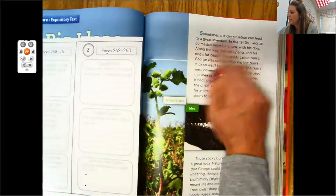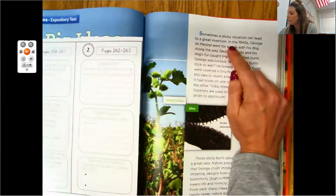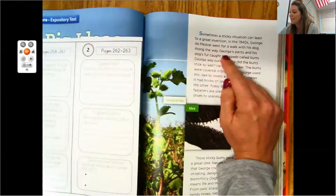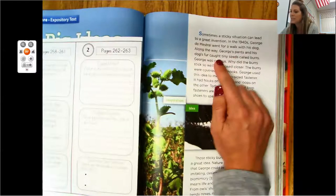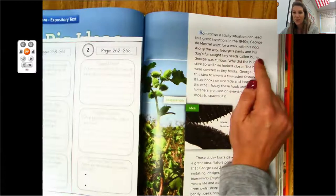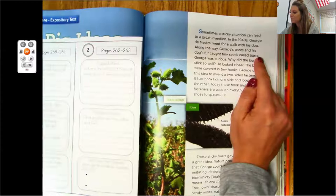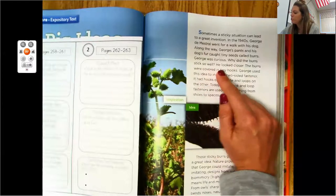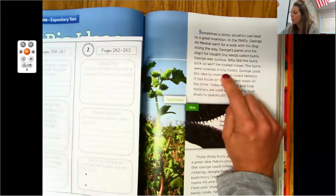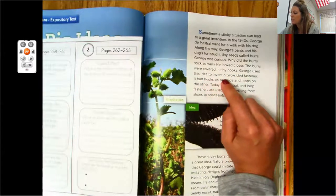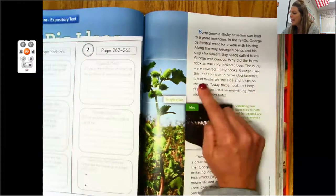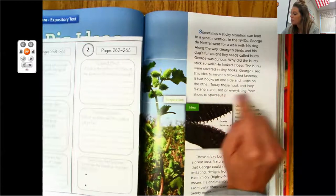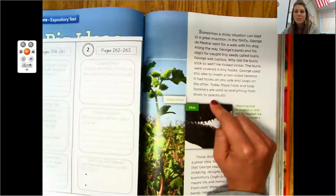Sometimes a sticky situation can lead to a great invention. In the 1940s George Day Mestral went for a walk with his dog. Along the way George's pants and his dog's fur caught tiny seeds called burrs. Have you ever had that happen to you when you've been walking out in nature? I know I have. George was curious. Why did the burrs stick so well? He looked closer. The burrs were covered in tiny hooks. George used this idea to invent a two-sided fastener. It had hooks on one side and loops on the other side. Today these hooks and loop fasteners are used on everything from shoes to spacesuits.